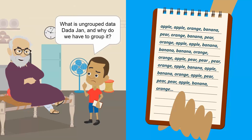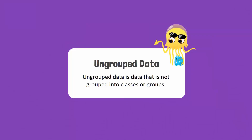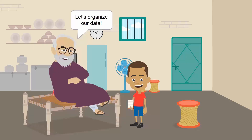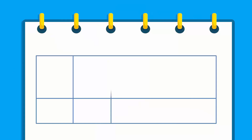Ungrouped data is data that is not grouped into classes or groups. It is difficult to make sense of data or to make it useful if it is ungrouped. To make your gathered data useful, we have to organize it into groups or classes. Let's see how.